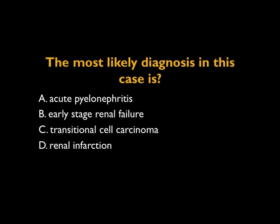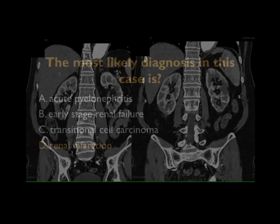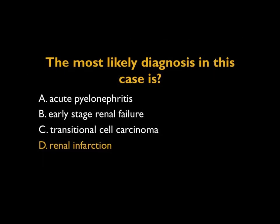This is an interesting case as well. Looking carefully at the coronal images, you see multiple patchy zones of low attenuation. It's more wedge-shaped, so you're thinking about pyelonephritis — which could be bilateral or unilateral — but more importantly, renal infarction. You can see thinning of the cortices and this wedge-shaped appearance. This is a classic case of bilateral renal infarction in a patient who had endocarditis.